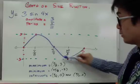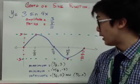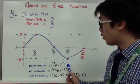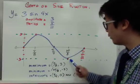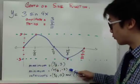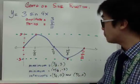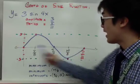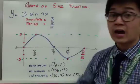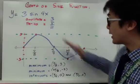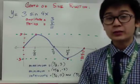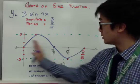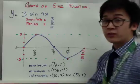The maximum point is at (π/8, 3), the minimum point is at (3π/8, −3), and the intercepts are at (π/4, 0) and (π/2, 0). These are the points where the graph intersects the x-axis. To graph a sine function you need your amplitude, your period, and the four partitions of your period — those give you the behavior of the sine graph.